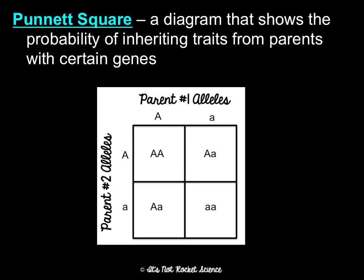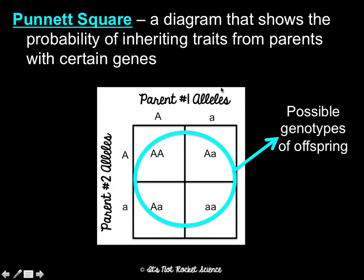The Punnett square is a great tool we're going to use the rest of this unit. It's a diagram that shows the probability of inheriting traits from parents with certain genes. On the outside, you put the genotype of the parents — it doesn't matter which parent goes on which side. On the inside, you fill in based on the corresponding boxes. This would be crossing two heterozygous parents. The possible genotypes of their offspring are: 25% homozygous dominant, 50% heterozygous, and 25% homozygous recessive — a genotypic ratio of 1 to 2 to 1. The phenotypic ratio would be 3 to 1, since three of them show the dominant trait and one shows the recessive trait.